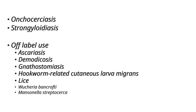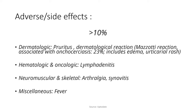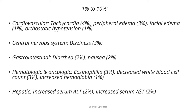The adverse effects after taking ivermectin are usually mild. In more than 10% of patients, dermatological features such as pruritus or rashes can be seen. There is a reaction called the Mazzotti reaction — usually rare but seen in patients with heavy worm infestation — which is the body's reaction to the clearance of worms. There can also be hematologic manifestations such as lymphadenitis, arthralgia, fever, and in 1 to 10% of patients cardiovascular effects like tachycardia, peripheral edema, and orthostatic hypotension.